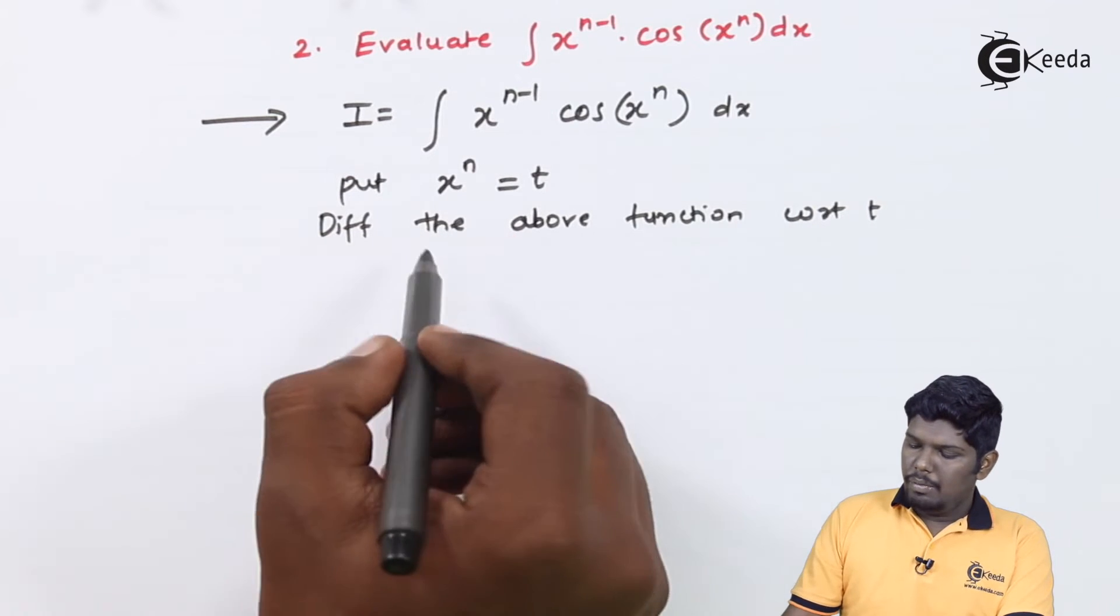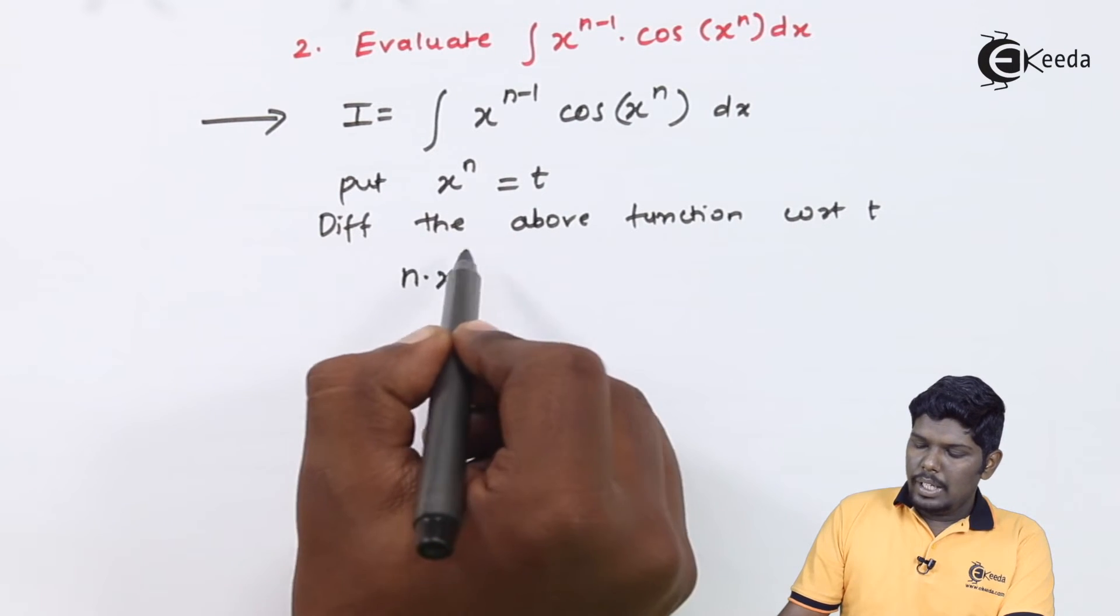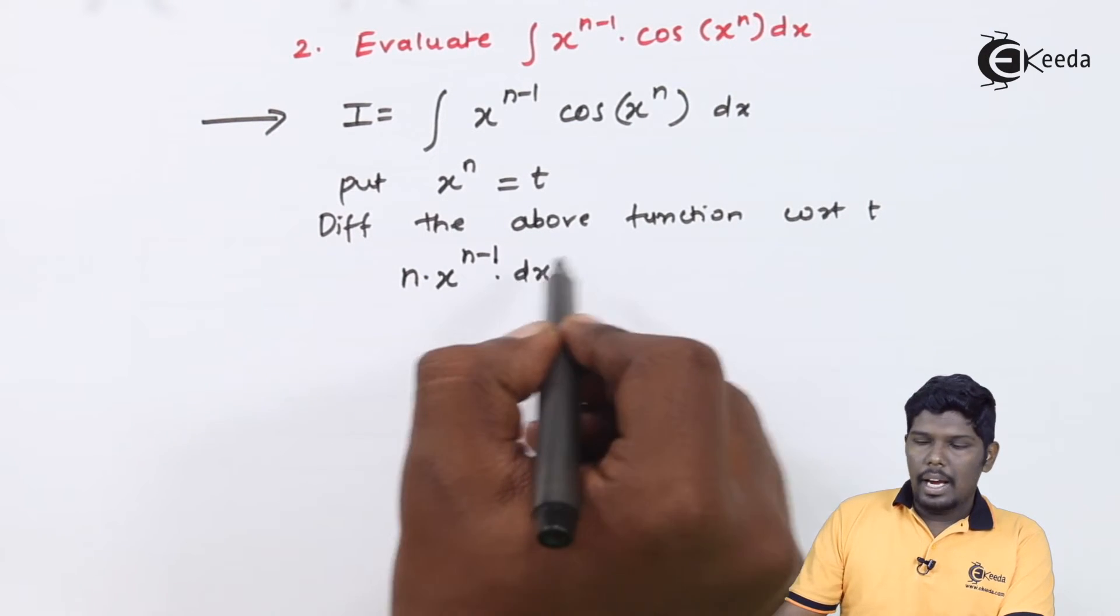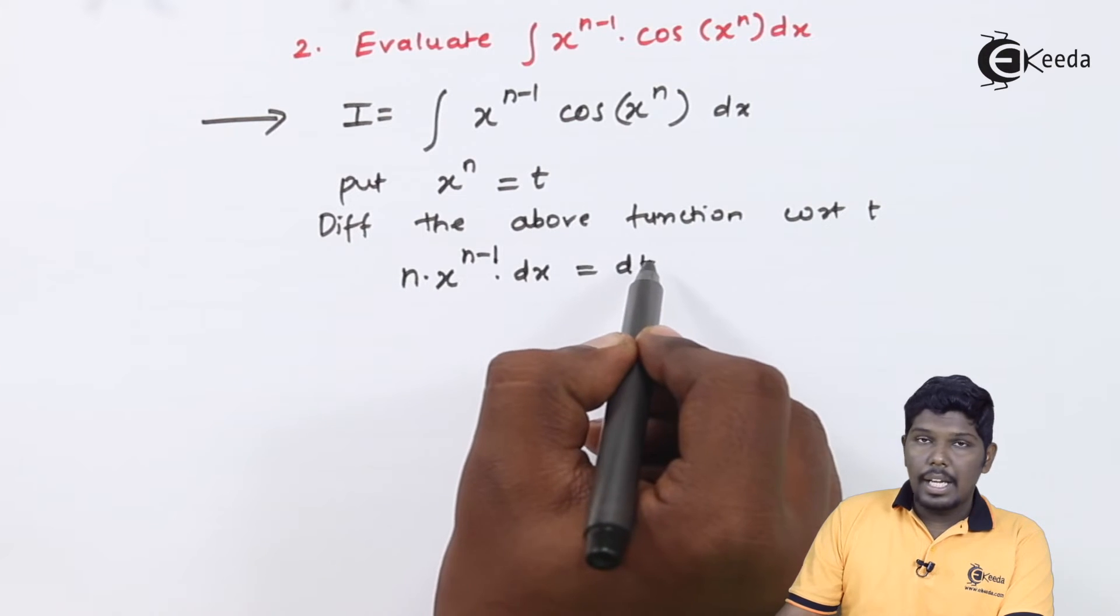Derivative of x raise to n will give you n into x raise to n minus 1, and with x you can directly write dx, and on the right hand side you can directly write it as dt.